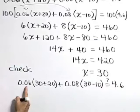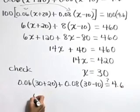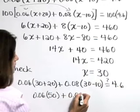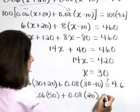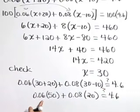I'm going to go ahead and leave these decimals in and work with them here. 30 plus 20 is 50, so we'll have 0.06 times 50 plus 0.08 times the difference between 30 and 10, which is 20. Is that equal to 4.6?